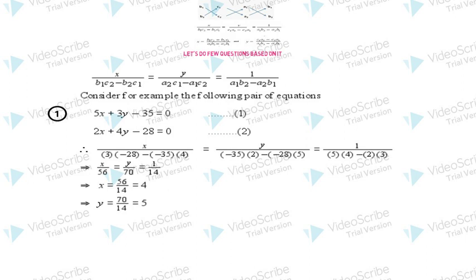As I told you earlier, the coefficient of x in the first equation is 5, so a1 = 5, b1 = 3, c1 = -35. Similarly in equation two, a2 = 2, b2 = 4, and c2 = -28. Now I'll put these values in the given formula, and after solving I'll get x = 4 and y = 5.